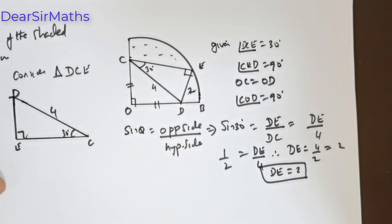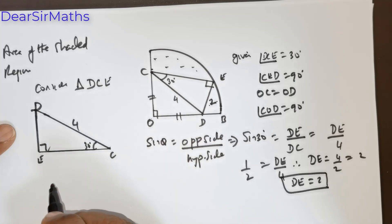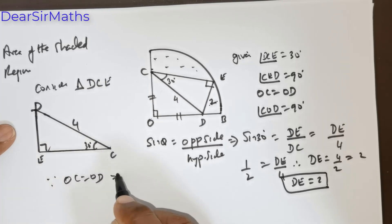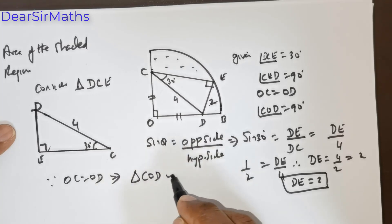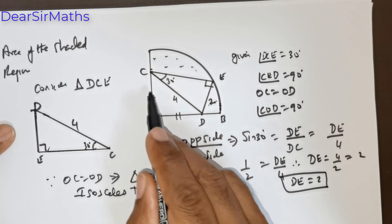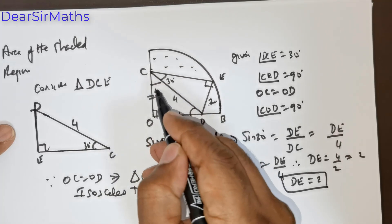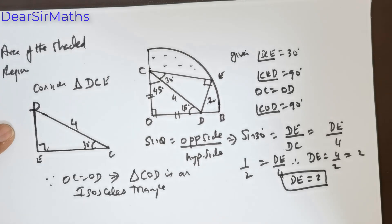This is 2 units. Now you will understand why within a few minutes. Since OC is equal to OD, triangle COD is an isosceles triangle. This angle is 90 degrees, and the equal sides make equal angles, so each base angle will be 45 degrees.